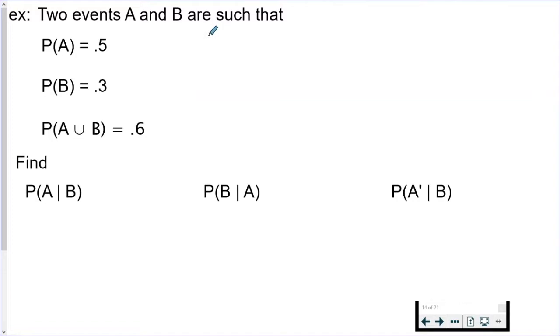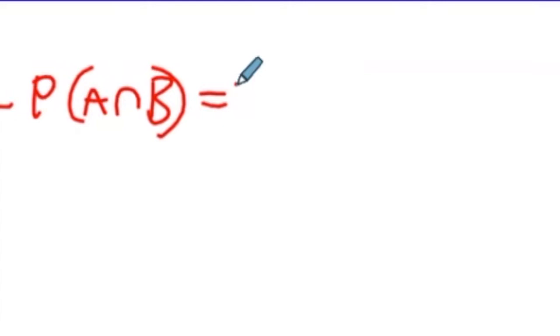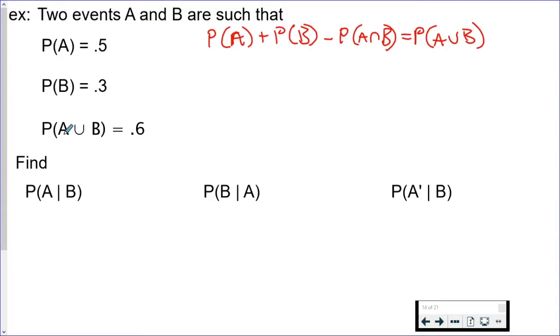I want us to try this now. Remember the very first formula I gave you? We've got A, we've got B, we've got the union. We need this part, we need the intersection.